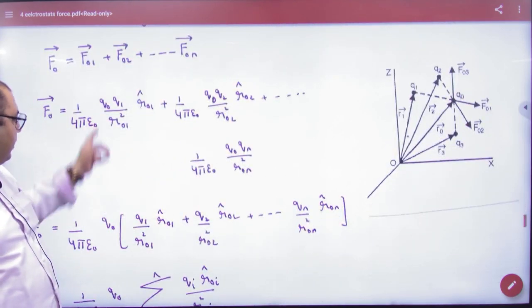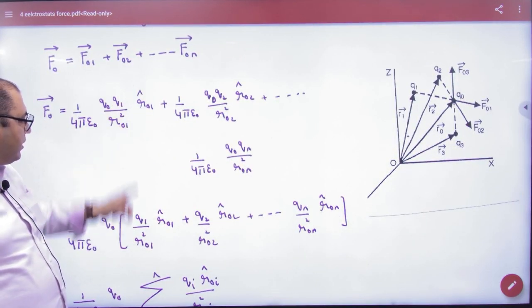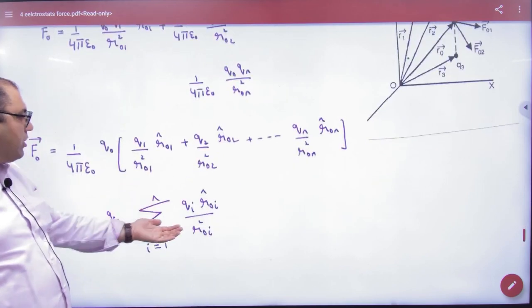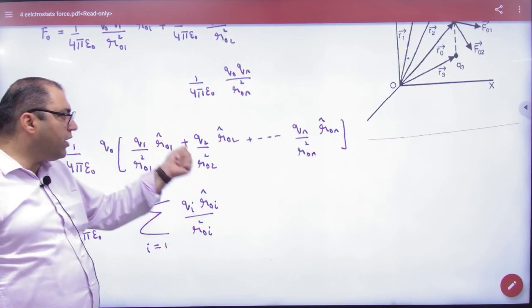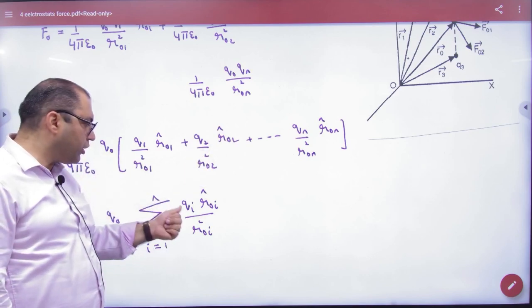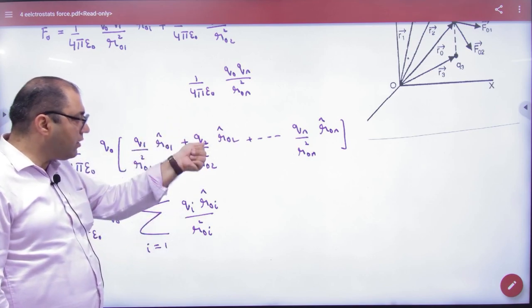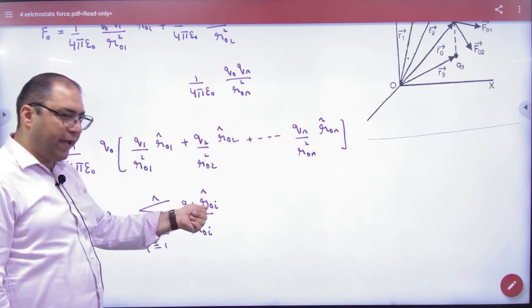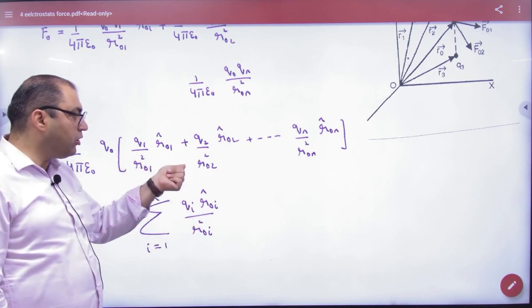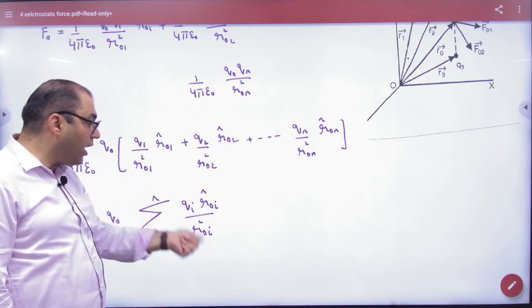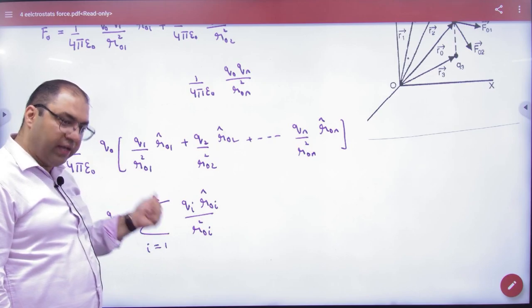Then take out the common term. What will remain? Q1, this term is saved. It is written in summation: Q1, q2, q3, q4... qi. R01, r02, r03... r0i cap. R01 square, r02 square, r03 square... r0i square. 1 to n.